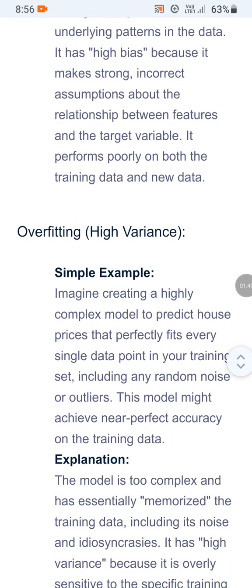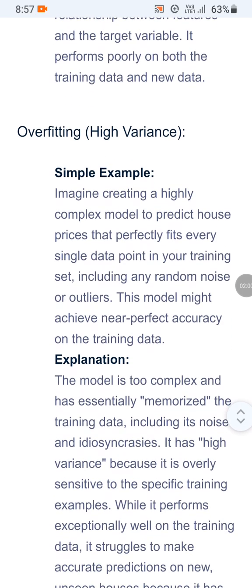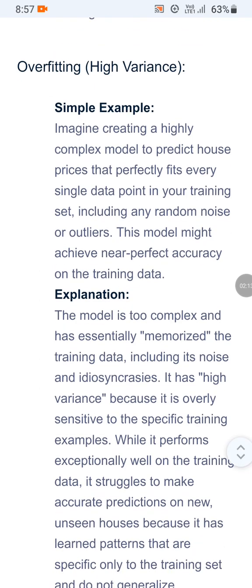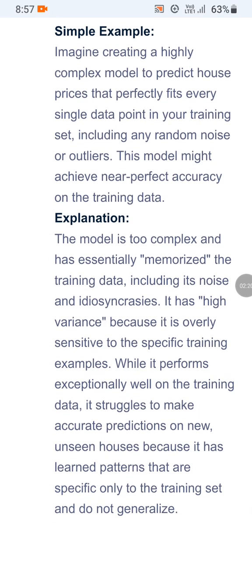Regarding overfitting, it is associated with high variance. Imagine creating a highly complex model to predict the house price — using the same example. This model perfectly fits every single data point in your training set, including any random noise or outliers. This model might achieve near-perfect accuracy on the training data.